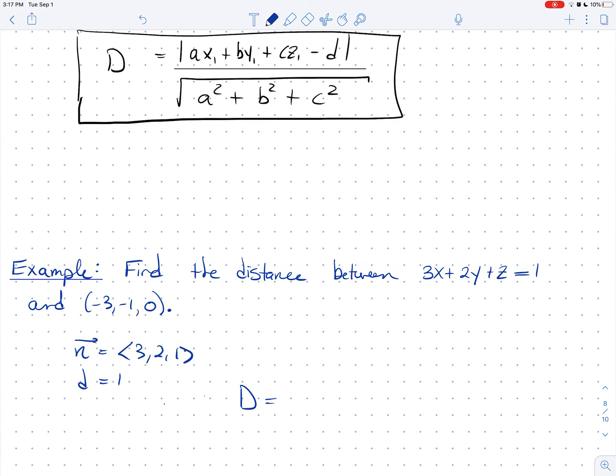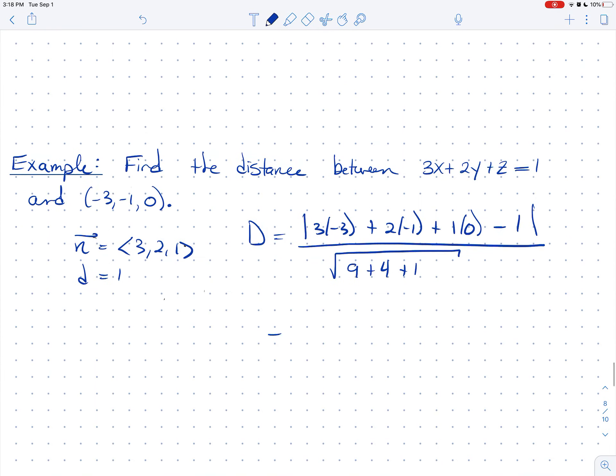So it's going to be the absolute value of A, which was 3 times X1, so 3 times negative 3 plus 2 times negative 1 plus 1 times 0, and then you're going to have minus D, so minus 1, all over the length of N, which is going to be the length of 9 plus 4 plus 1, so root 14. So I just end up with the absolute value of negative 9 minus 2 minus 1 over square root of 14. So this is exactly 12 over the square root of 14. That's the distance between this point and this plane, just using a formula.